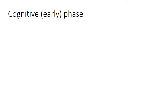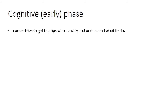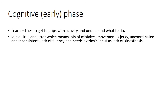The first stage is known as the cognitive phase, or the early phase — the first stage in learning. During this stage the learner really tries to get to grips with the new activity and understand what to do. It's characterised by lots of trial and error, which means lots of mistakes. The movements might be a bit jerky and uncoordinated, with not much consistency. There's a lack of fluency, and the learner probably needs some extrinsic input — an external source telling them what to do — as they haven't yet developed that kinesthetic feeling.